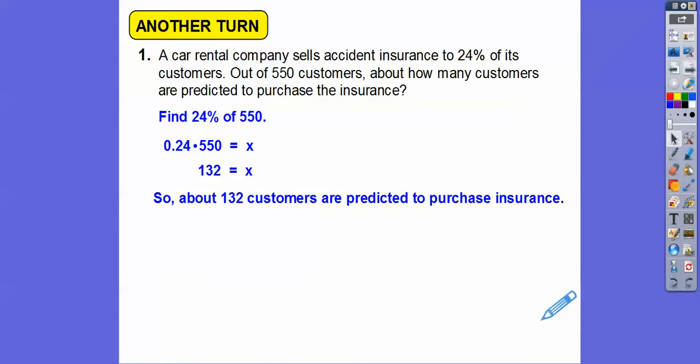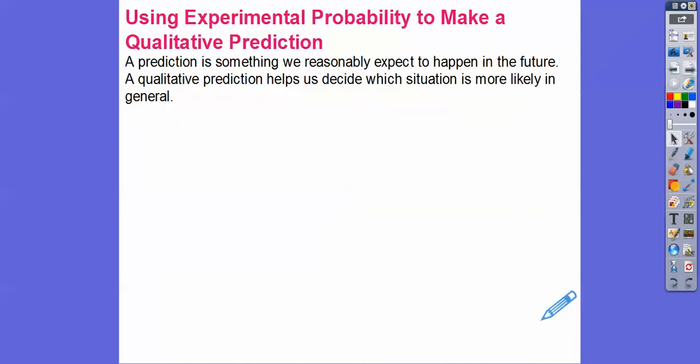I always try to answer the question in the context of the problem. So it's asking about how many customers are predicted. So don't just write 132. What's that mean? In this case, it's 132 customers are predicted to purchase that insurance. I really try to emphasize that in my class. I try to answer the question in the context of the problem.